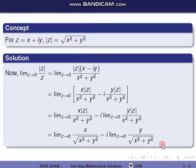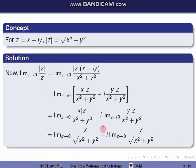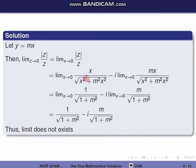We substitute y equals mx along a path. So limit becomes limit x tends to 0 of x by square root of x squared plus m squared x squared, minus i times limit x tends to 0 of mx divided by root of x squared plus m squared x squared. Taking x as common factor in the denominator, x cancels, giving limit x tends to 0 of 1 by square root of 1 plus m squared, minus i times limit x tends to 0 of m by root of 1 plus m squared. The x term is not present, so it is not a constant.